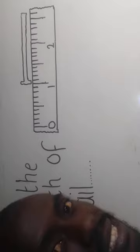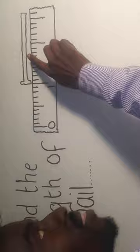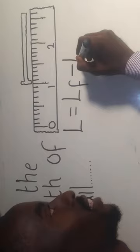Length is also known as distance. We are talking about measurement - measurement is the determination of the size of an object. To find the length of the nail, we need to use this formula: L equals final length minus initial length.